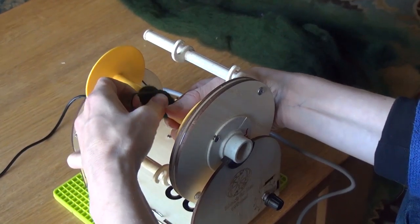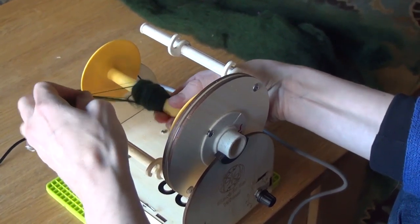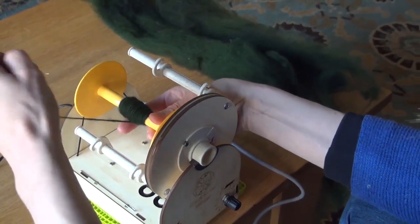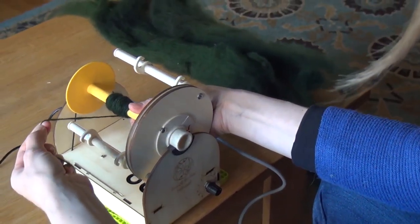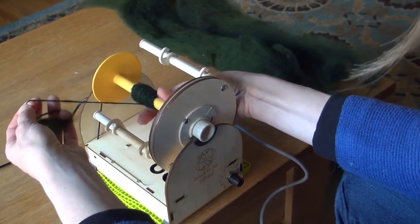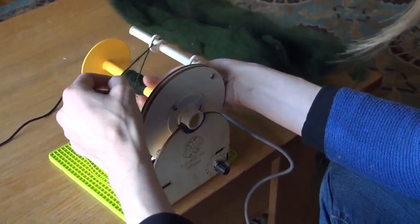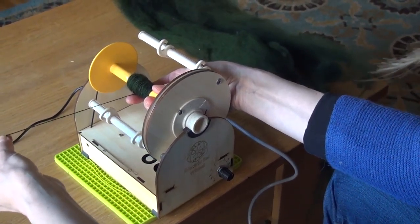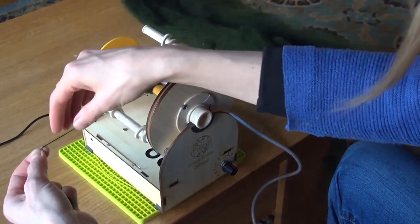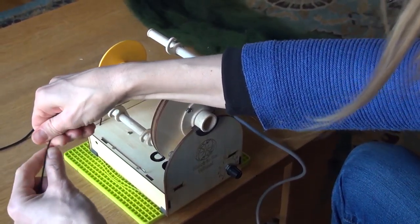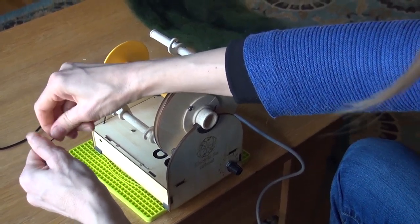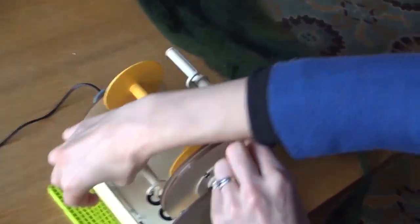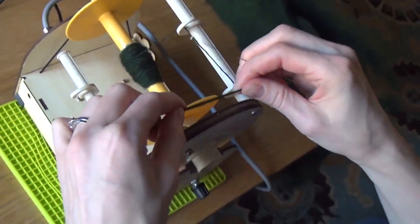Sometimes people have a hard time getting their yarn off when they thread it through—it keeps breaking. One thing you can do is go back to a place where it stops breaking, or you can manually twist it just for the piece that you want to get through the wheel. Then you're just going to thread it back.